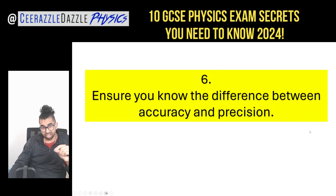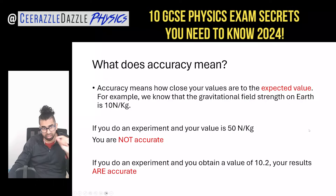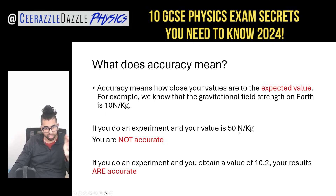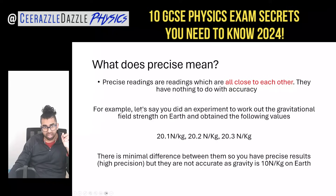Tip six: ensure you know the difference between accuracy and precision. Accuracy means how close your values are to the expected value. For example, if the gravitational field strength on Earth is 10 N/kg and you got 50, you are not accurate. But if you got 10.2, your results are accurate because they're close to the expected value.